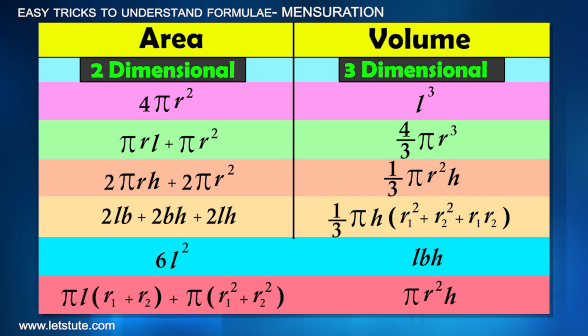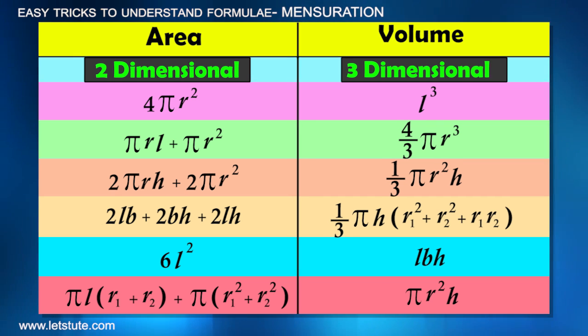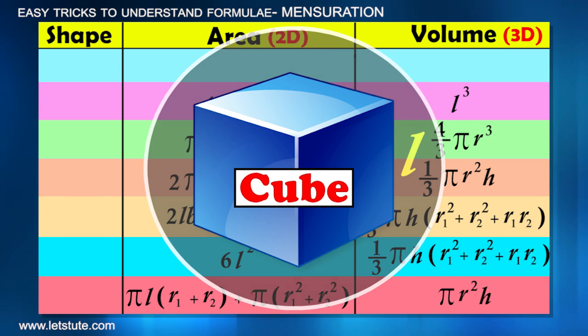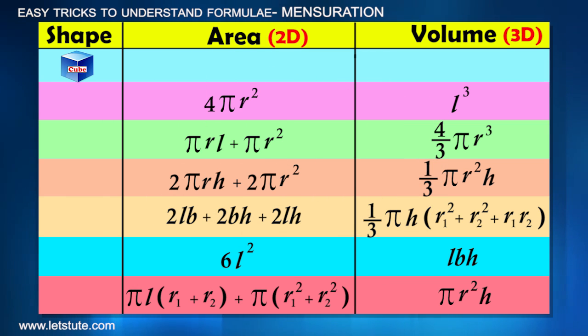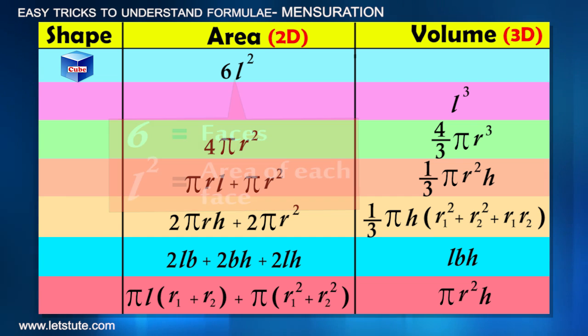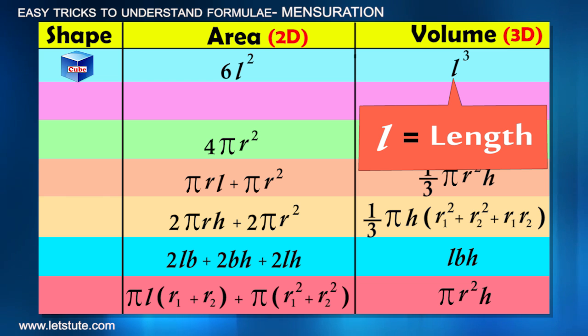This way, areas and volumes are divided. Now let's assign them according to the shapes. Let's take the cube first. Its surface area is 6L², where 6 represents 6 faces, and L² represents the area of each face, and volume will be L³, as it is taking equal space in all three directions, and L represents length.